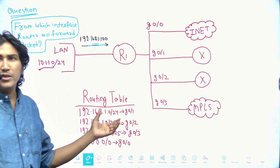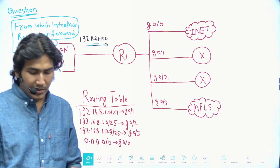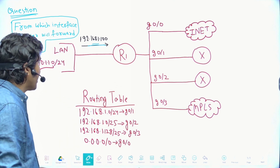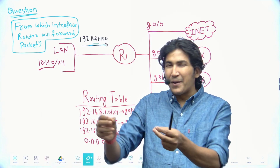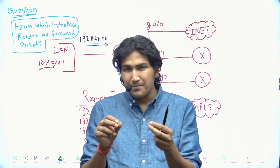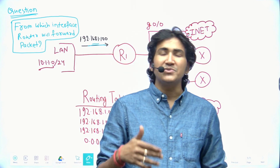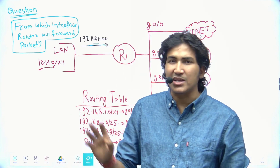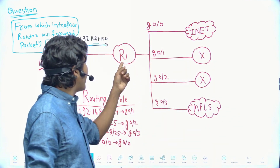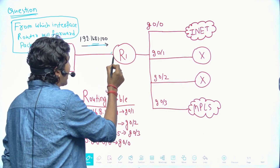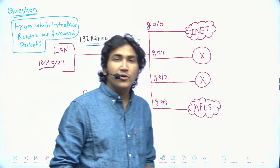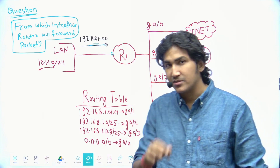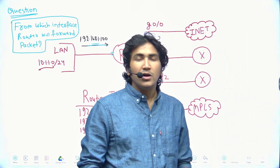In the routing table of Router 1 we have four subnets. When a router receives a packet on its interface, it performs multiple checks — ACL, routing table, NAT table, and more. For best path selection, the router performs three specific checks.